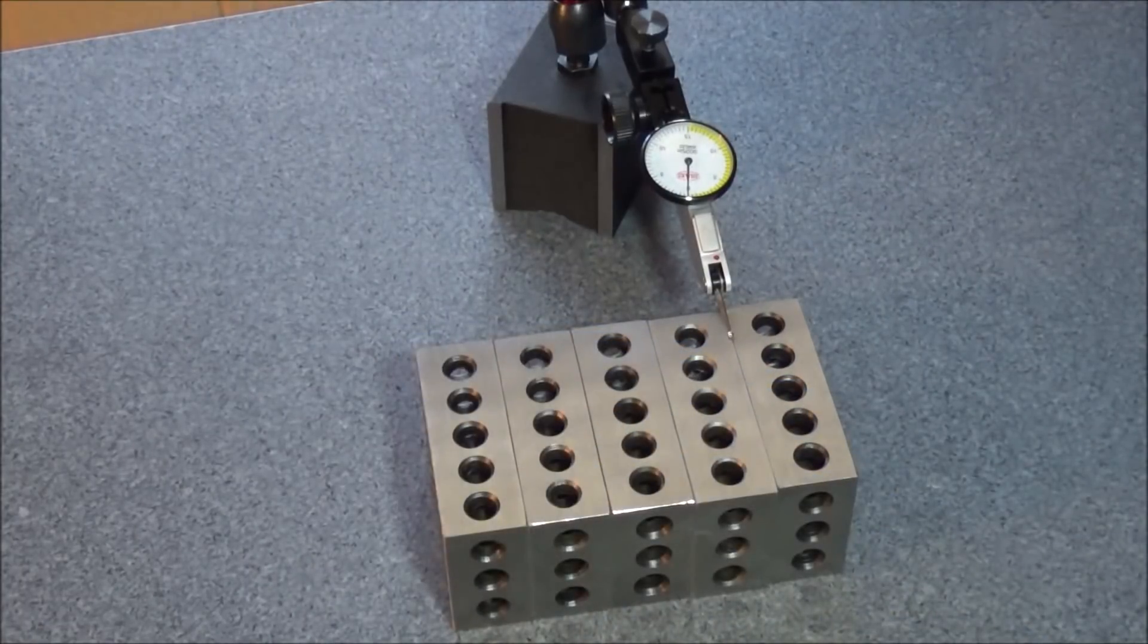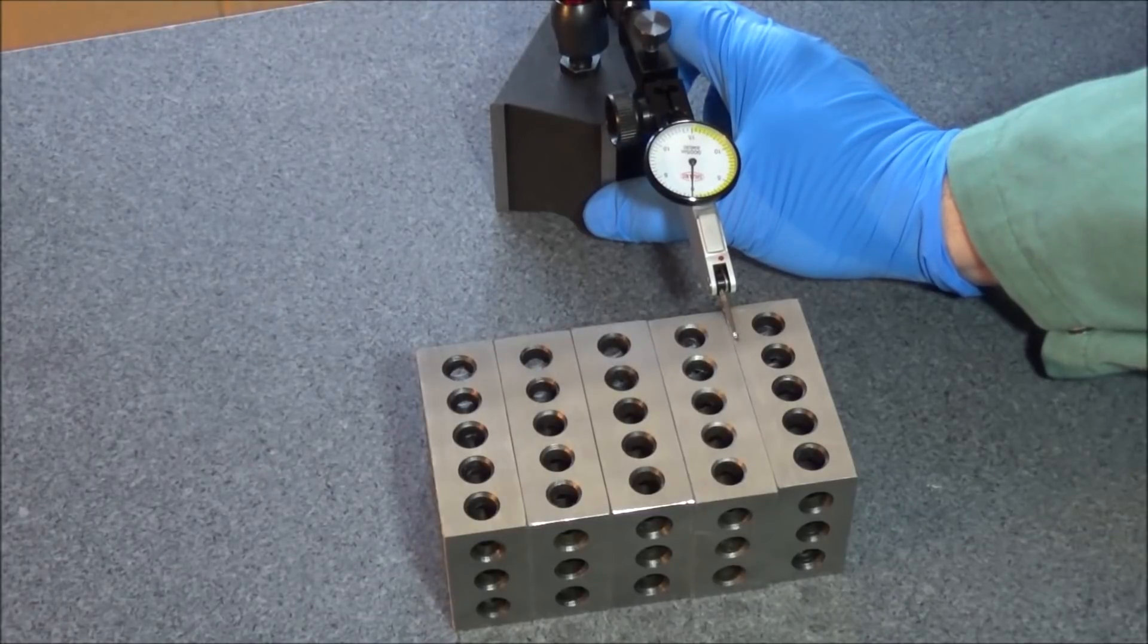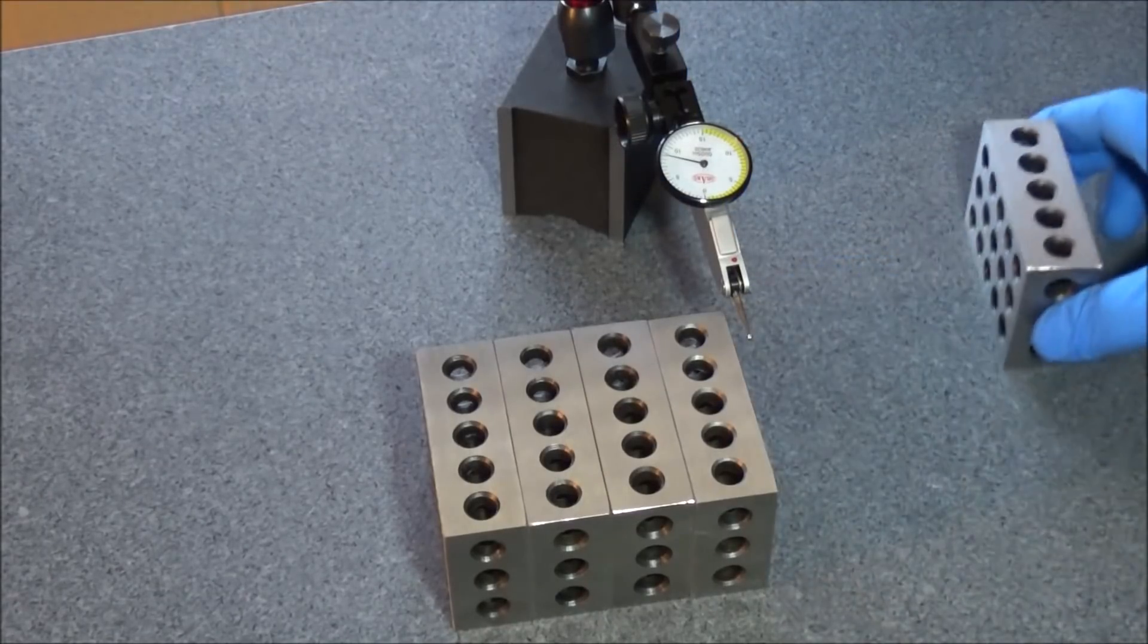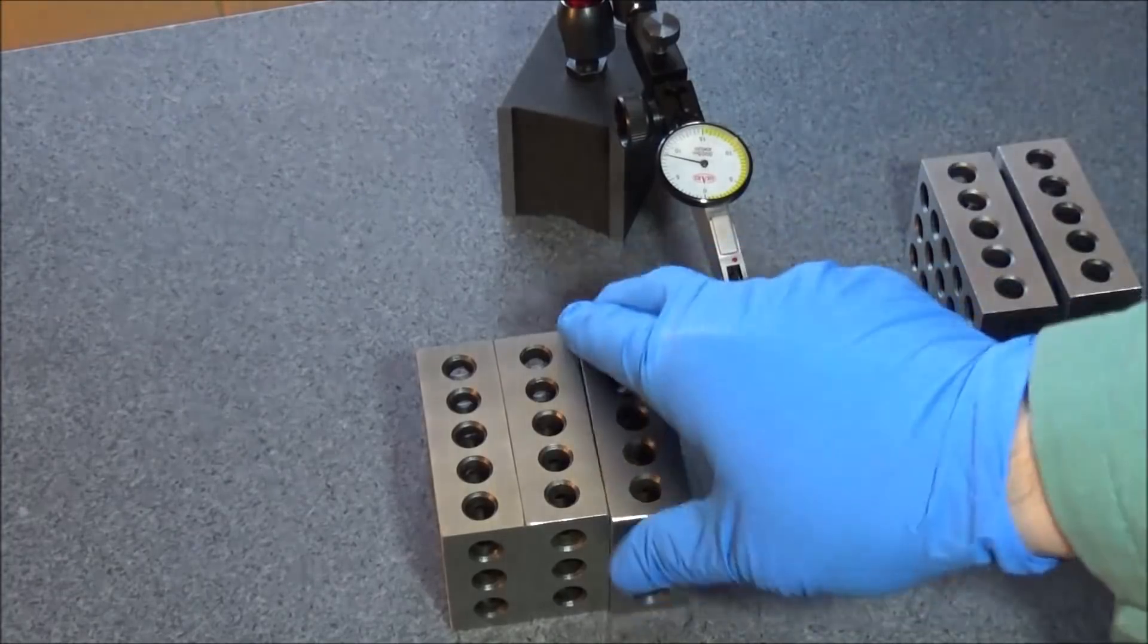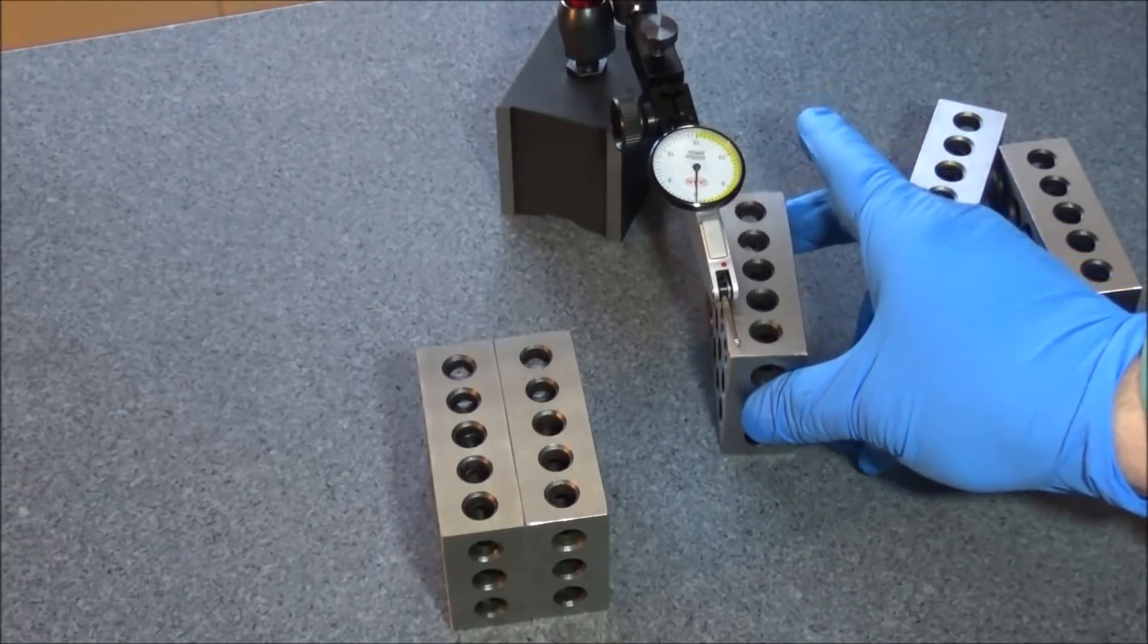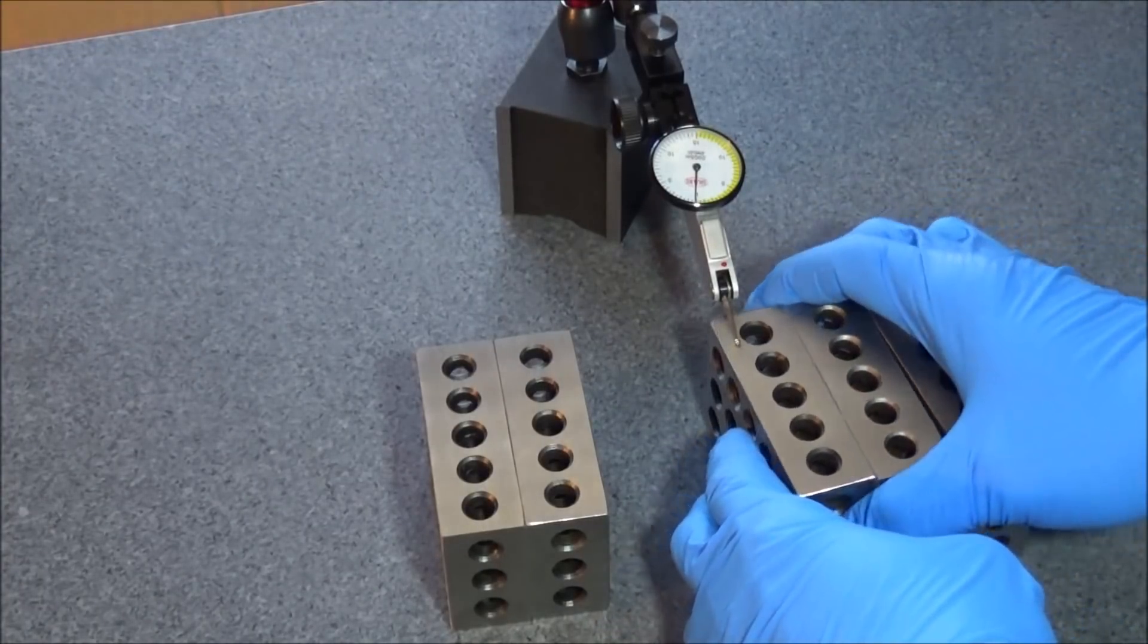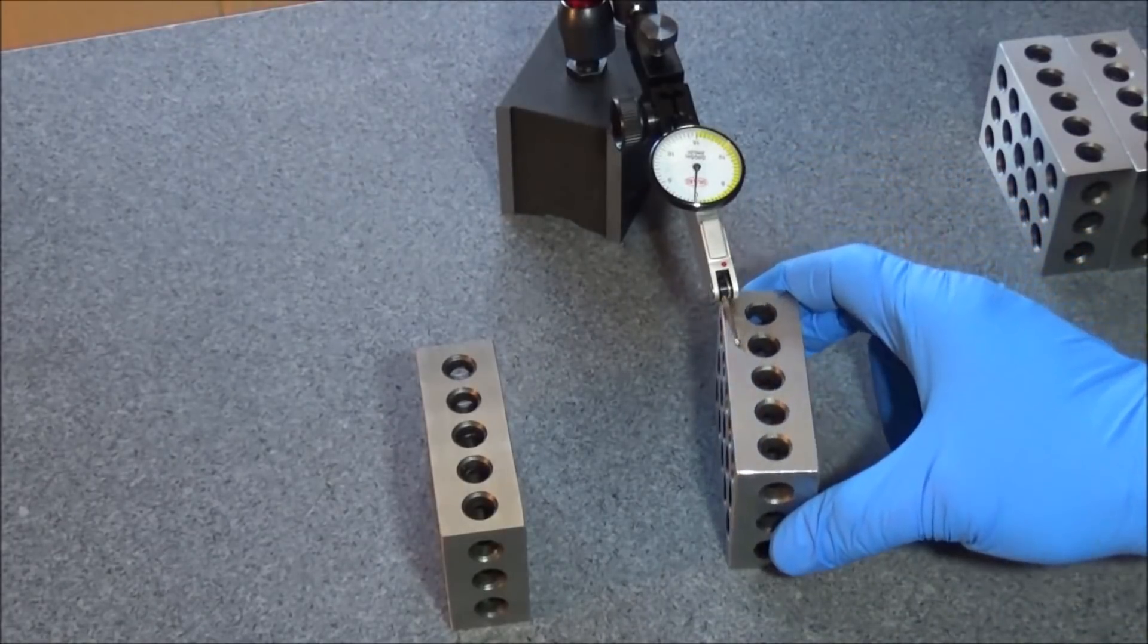Let me show you. Now this particular indicator here is half a thou, five tenths. So moving these 1-2-3 blocks across here, they should all be on zero if they're plus or minus two tenths or within a couple of tenths. They should all show up as zero using this particular indicator.